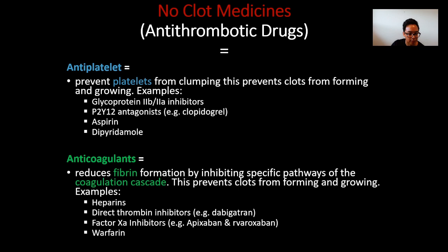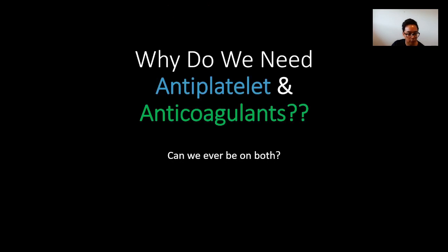I call these 'no clot medicines' to simplify things. Anti-thrombotic drugs are made up of anti-platelets — which prevent platelets from clumping, preventing clots from forming and growing. Examples include glycoprotein 2b/3a inhibitors, P2Y12 antagonists, aspirin, and dipyridamole. Then you have anticoagulants, which reduce fibrin formation by inhibiting specific pathways of the coagulation cascade. Examples include heparins, direct thrombin inhibitors, Factor Xa inhibitors, and warfarin.